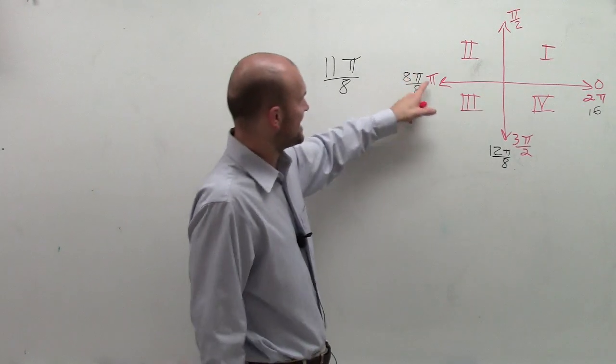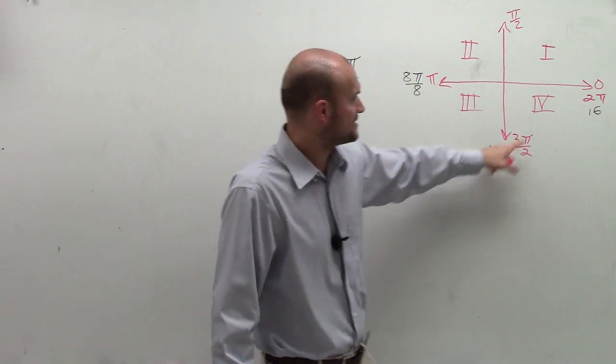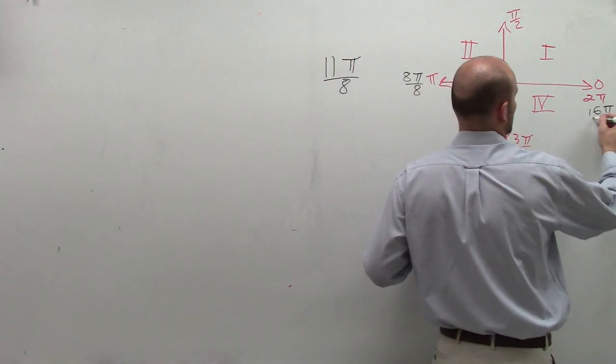OK, so what we have here is 8π over 8, and then here's 12π over 8. So here's 16π over 8.